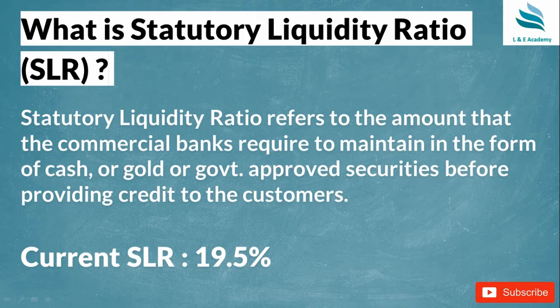What is Statutory Liquidity Ratio? SLR refers to the amount that commercial banks are required to maintain in the form of cash, gold, or government approved securities before providing credit to customers. It is very simple — there are banks and there is RBI. RBI says to the commercial banks that you need to keep some amount of government securities, gold, or cash with RBI as a security.